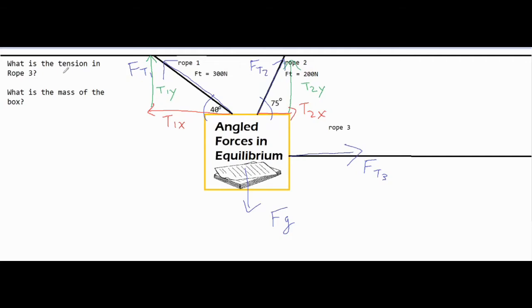We want to find two values: we're looking for the tension in rope number three and the mass of the box. When approaching a problem like this you want to be very careful and detail oriented about your setup, and you want to save your numbers to the very end. I'm going to set up my sum of forces in the x and y direction in variable form and put my numbers in last.